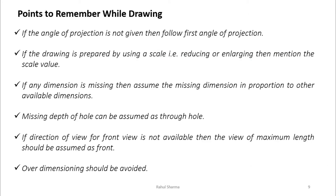Keep these things in mind when drawing orthographic projection: first, if the angle of projection is not given, follow first angle projection. Second, if the drawing is prepared using a scale — for very large or very small objects — you must state the ratio or scale used. Third, if any dimension is missing, assume a proportionate dimension.